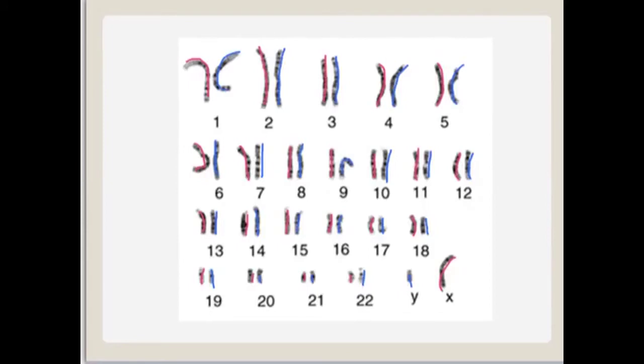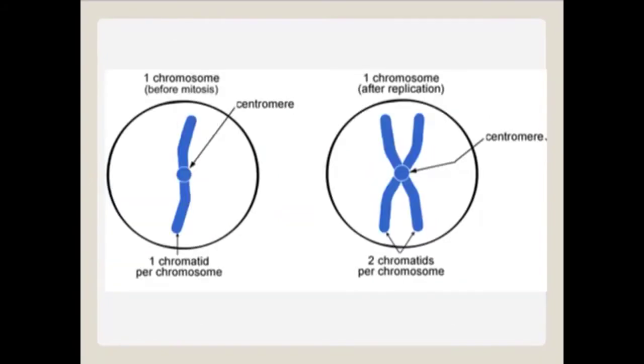In order to become a reproductive cell, the group of 46 chromosomes need to replicate and make exact copies of themselves. After replication, each chromosome has identical pairs of chromosomes called sister chromatids.